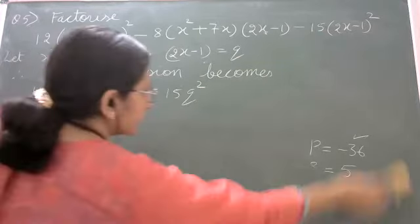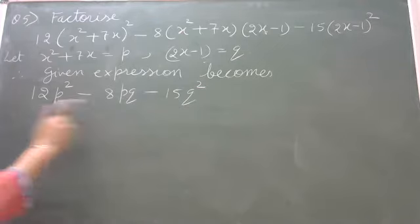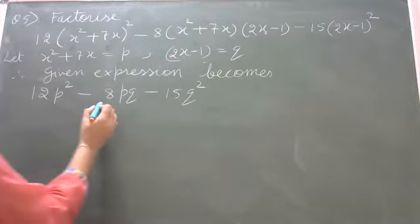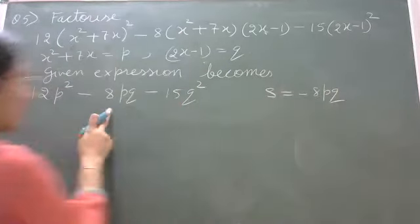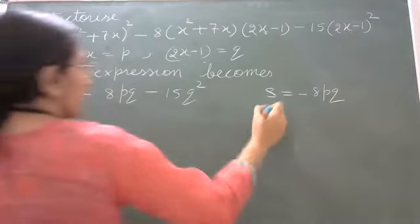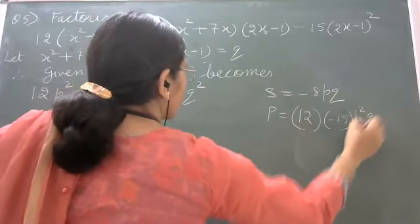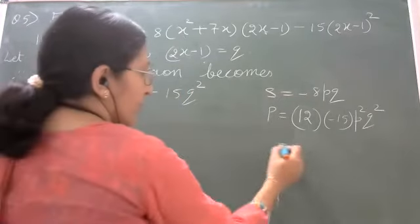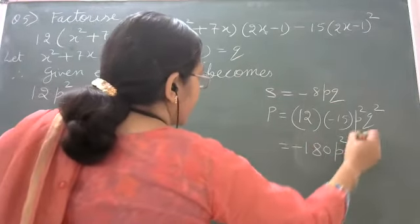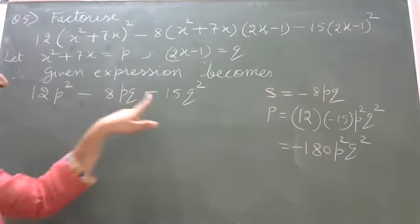Now we need to find two numbers whose sum is minus 8pq (the middle term) and product is 12 times minus 15 p square q square, which equals minus 180 p square q square. Since both sum and product are negative, one number is positive and one is negative, and the larger number has a negative sign.